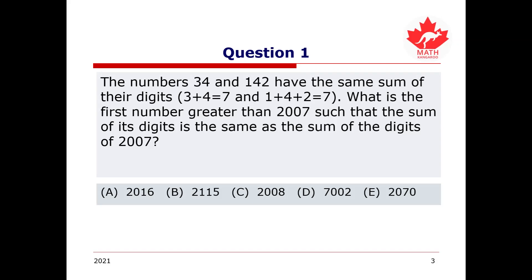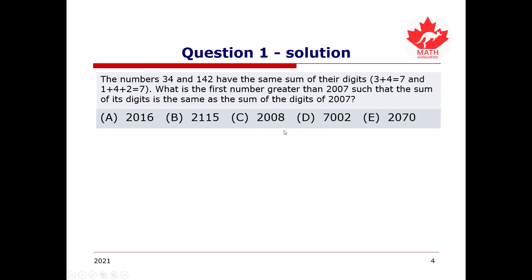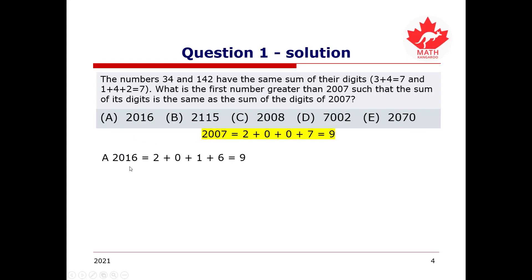Hopefully you've got an answer — let's see if you got it correctly. The first thing we want to do is figure out the sum of the digits of 2007: 2 plus 0 plus 0 plus 7 gives us 9. Now that we know we're looking for digits that add up to 9, we can check each option. A: 2016 gives 2 plus 0 plus 1 plus 6 equaling 9. B: 2115 gives 2 plus 1 plus 1 plus 5, also equaling 9.